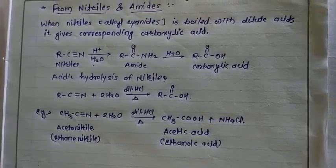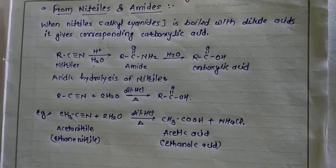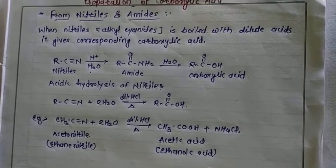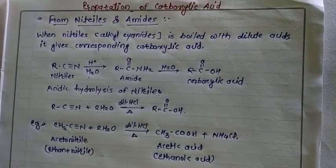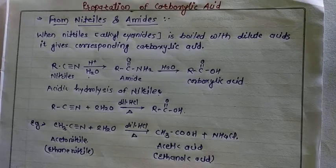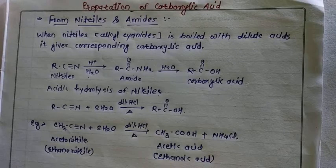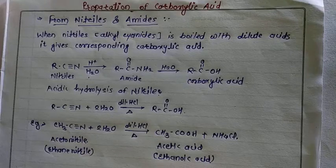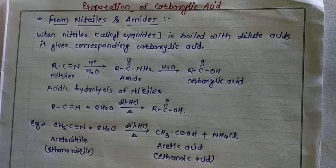So we have the preparation of carboxylic acid from nitrile — the nitrile on acidic hydrolysis gives carboxylic acid. After this example, we will discuss its short mechanism.